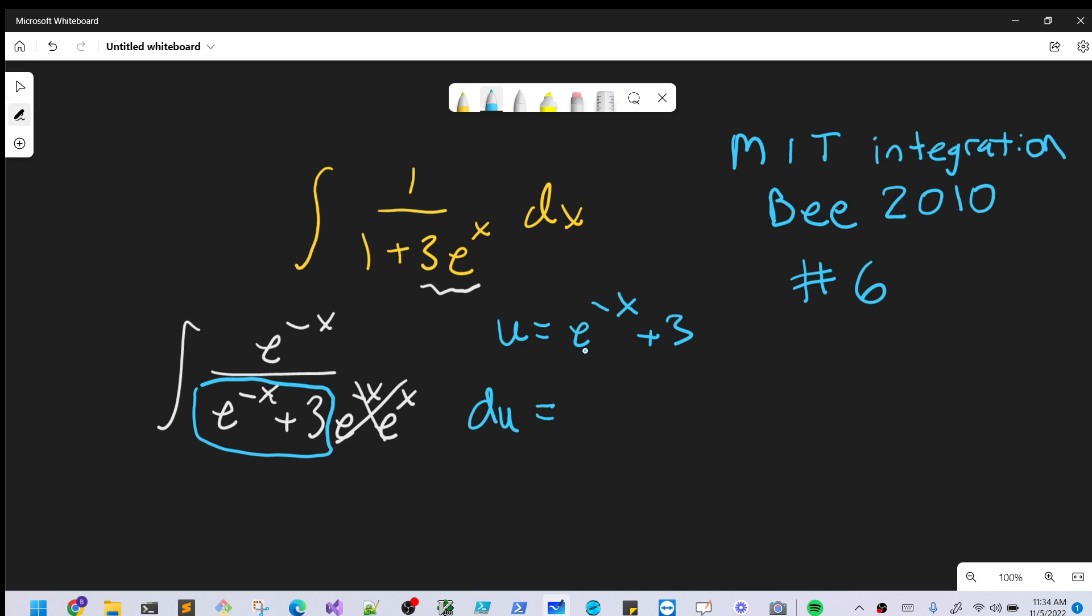We get du. The derivative of e^(-x) is -e^(-x), derivative of 3 is 0, so we'll ignore that. So du = -e^(-x) dx.